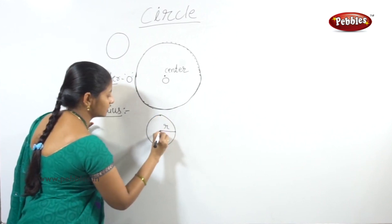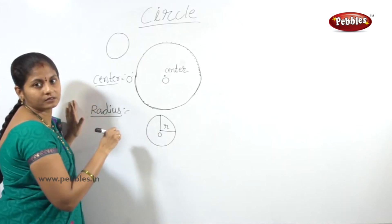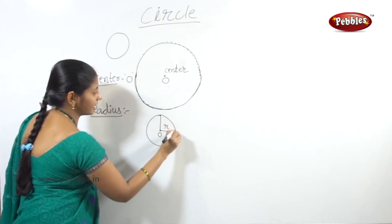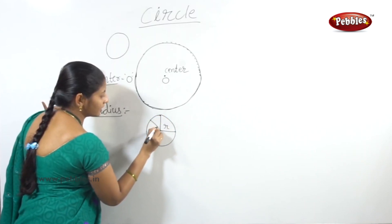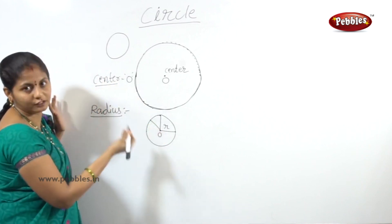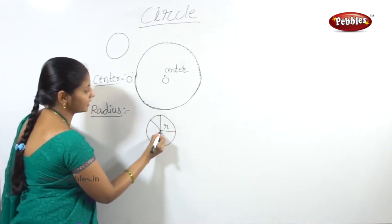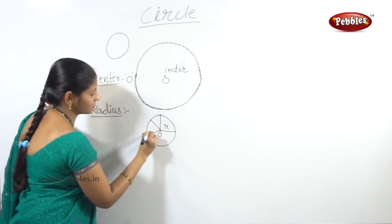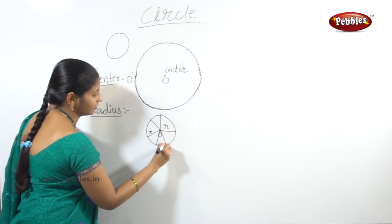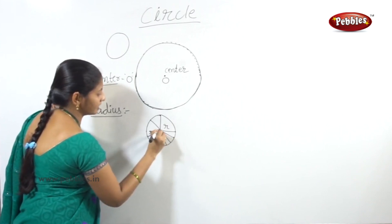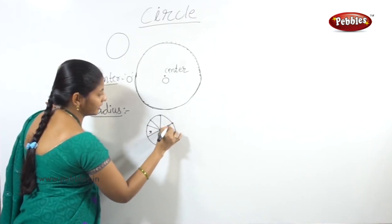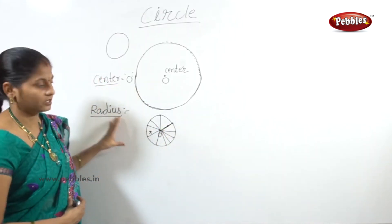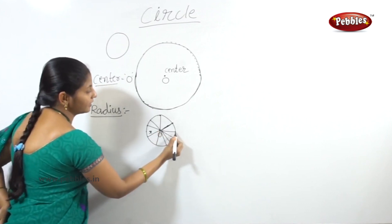The radius is the distance between the center of the circle and any point on the circle. There can be so many radii drawn from the center to any point on the circle.